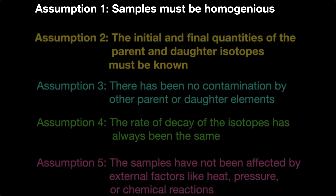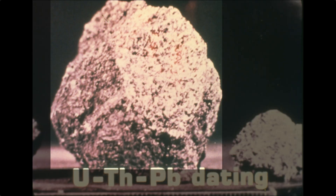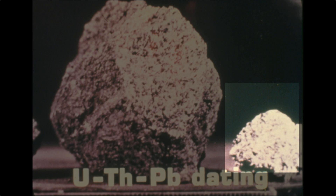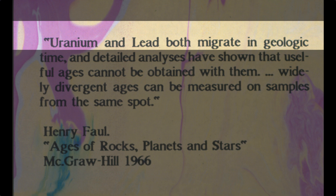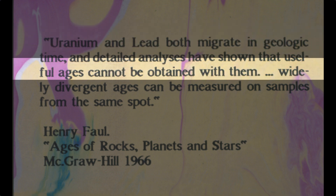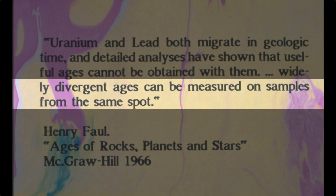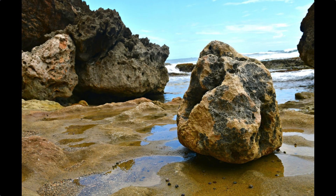There are many assumptions in radiometric dating. Some methods need more than others, but all need some very basic assumptions. Assumption one: samples must be homogeneous. The parent element — uranium, for example — and the daughter, the element that the parent decays into, in this case lead, must be evenly distributed throughout the sample. As we saw in episode 28, Henry Fowle pointed out long ago that uranium and lead both migrate in geologic time and useful ages cannot be obtained with them. Widely divergent ages can be measured from samples of the same spot. Pieces chipped from one rock can give ages from almost nothing to many millions of years. Plausible stories and excuses have been thought up to explain away the problem, but you have to want to believe them to be convinced.